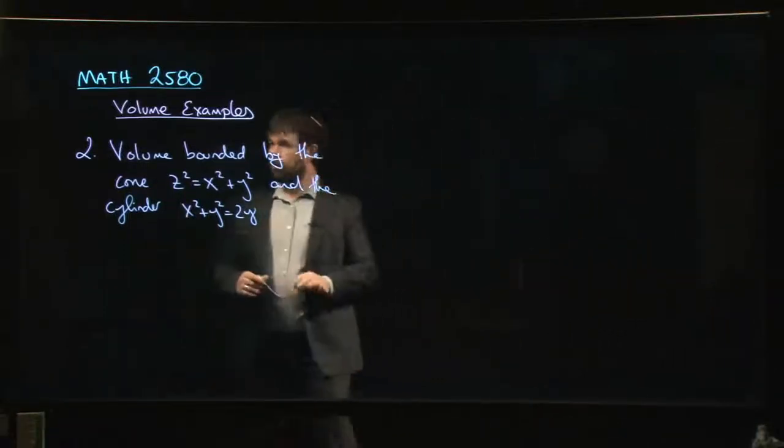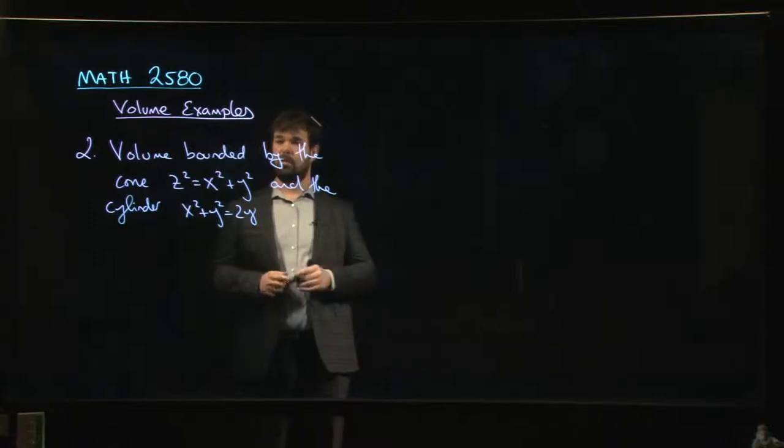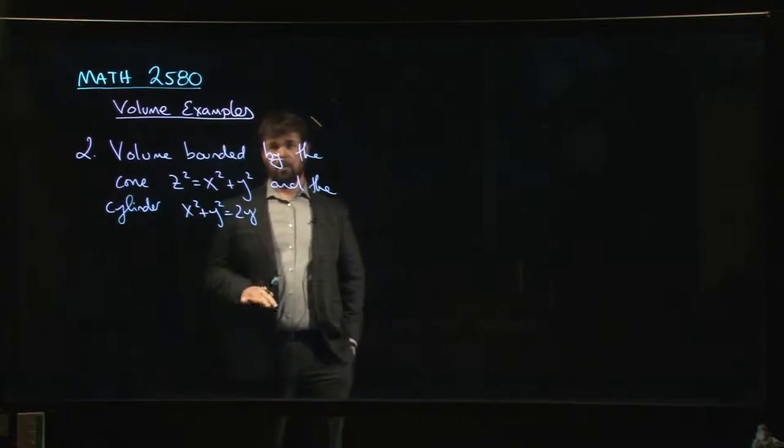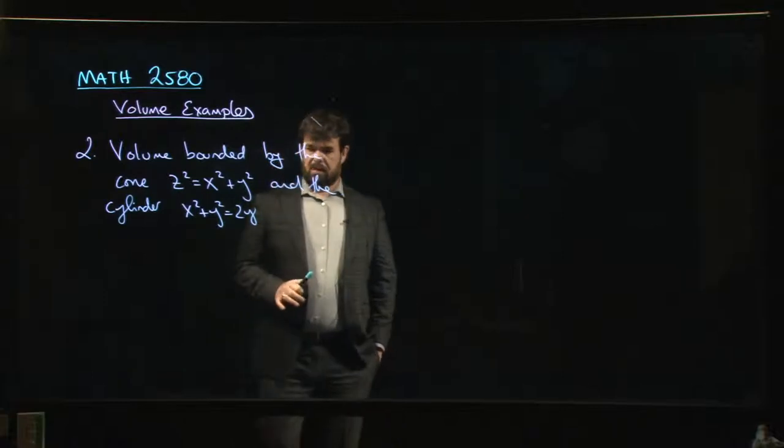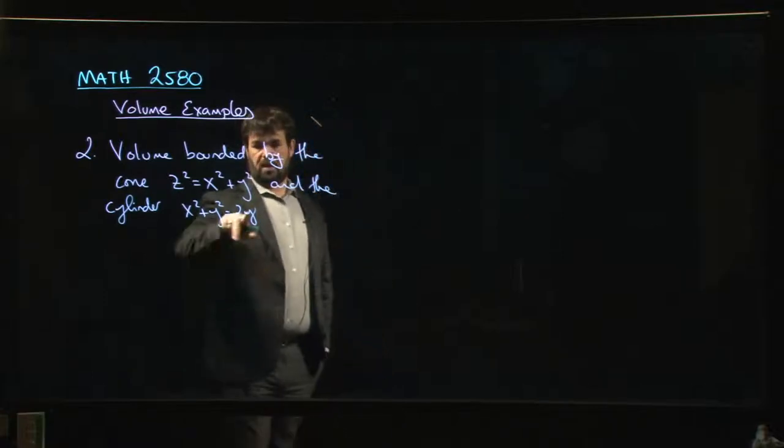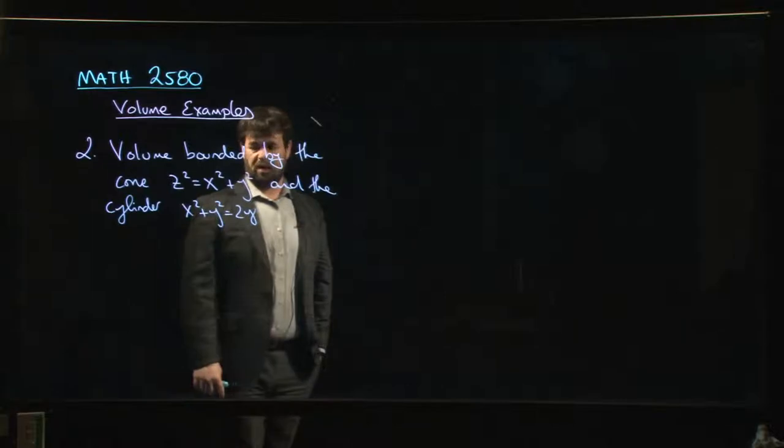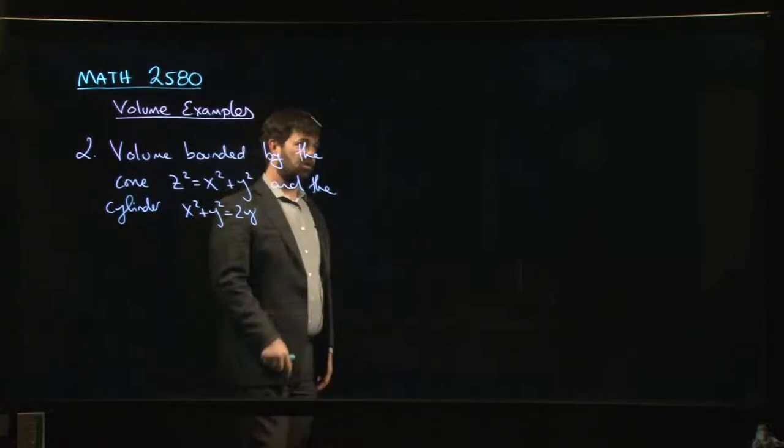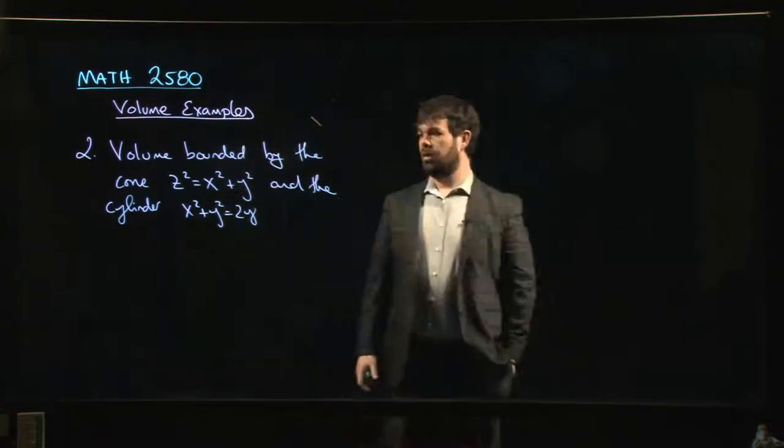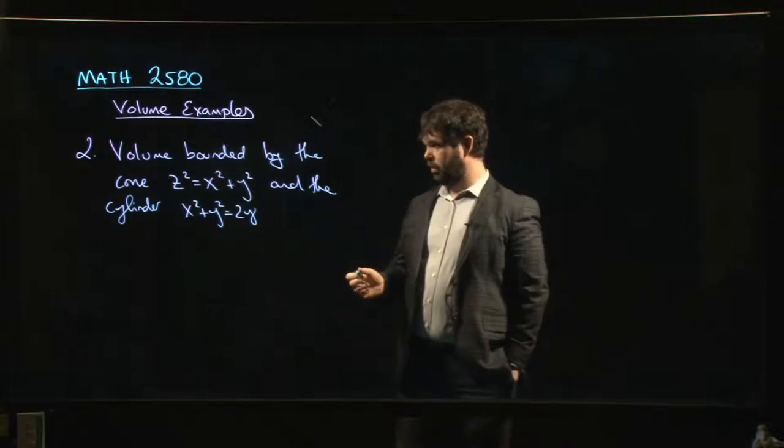Alright, so here's our second example of finding volume. We're going to set this up as a double integral. This is going to be one that works better in polar coordinates, which you might guess. Anytime you see x squared plus y squared, that's probably a clue that polar coordinates might be useful, because we know that x squared plus y squared equals r squared in polar.